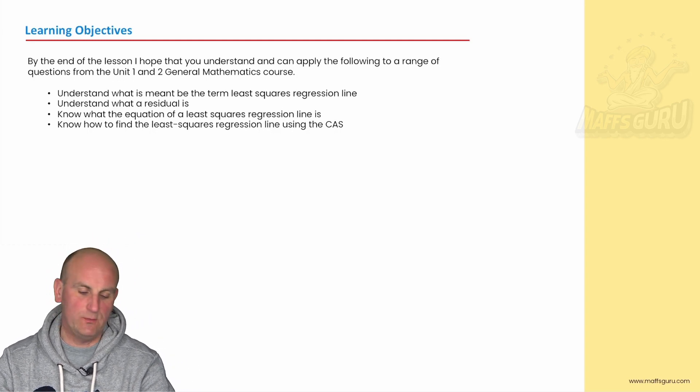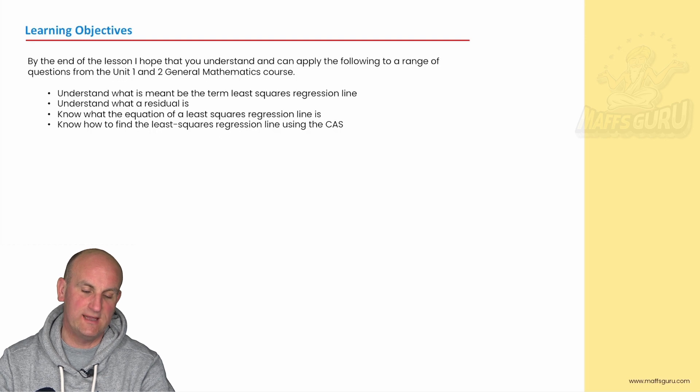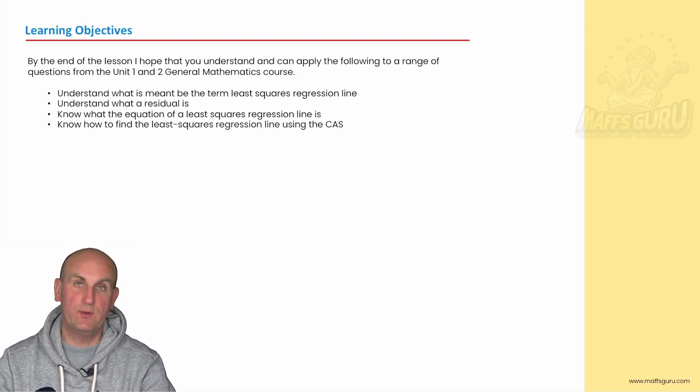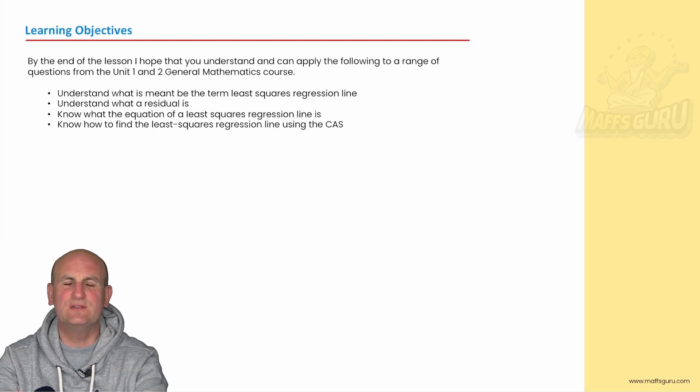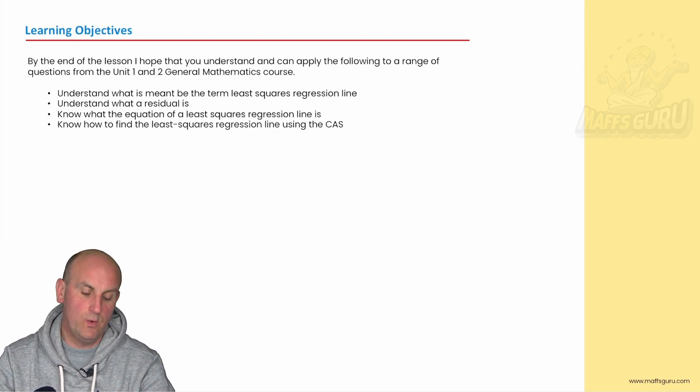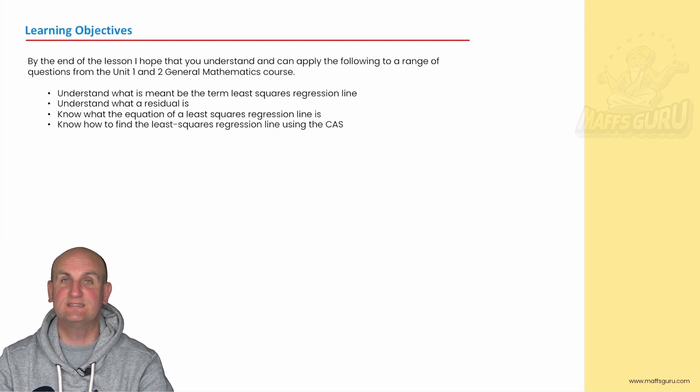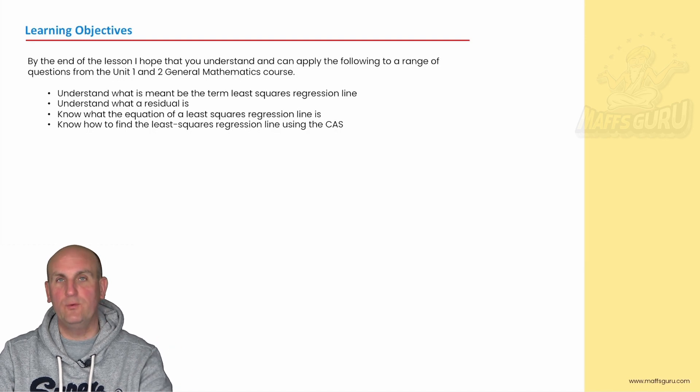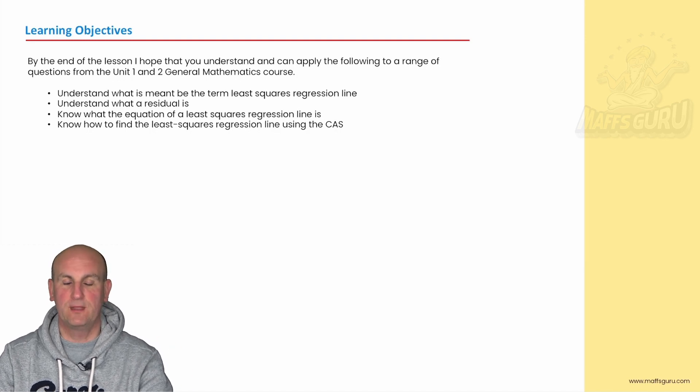Here we go. We are going to understand what is meant by the term least squares regression line. That's going to be most important for the whole video. Understand what a residual is—massively important next year. Know what the equation of a least squares regression line is and how to find it using your CAS. This is a CAS enabled course. So if you have your CAS, have it with you. We will do a walkthrough a little bit later on.